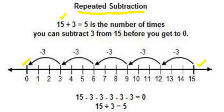I have taken 15 as the dividend and 3 as the divisor on a number line. I move 3 units at a time: first, second, third, fourth, and fifth time. After the fifth move, the remainder is 0 — it has completely divided. So the quotient is 5 and the remainder is 0.